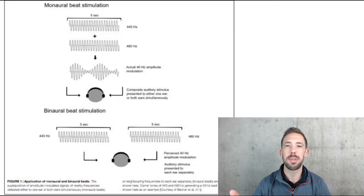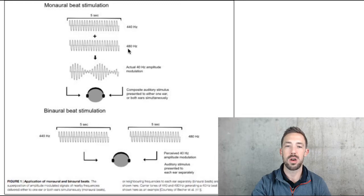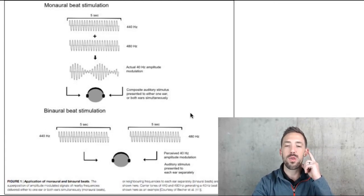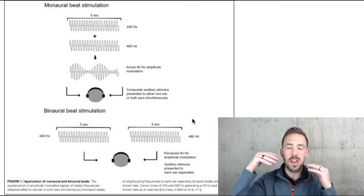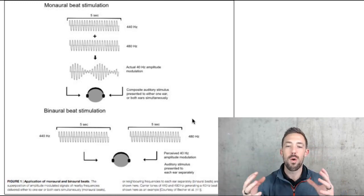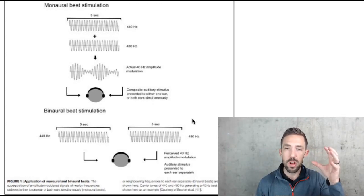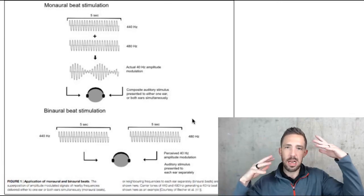What does a binaural beat mean? It means there are two different frequencies. A monaural beat means one frequency — like 440 Hz and 480 Hz — going into both ears simultaneously. Binaural means putting 440 Hz in one ear and a different frequency like 480 Hz in the other ear. Your brain picks up the difference between the two and perceives it as a 40 Hz stimulus. That's why you have to wear headphones — your brain detects those frequencies and sets itself to certain wavelengths.